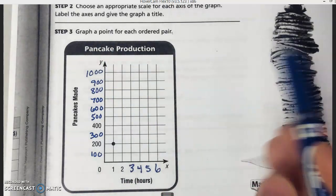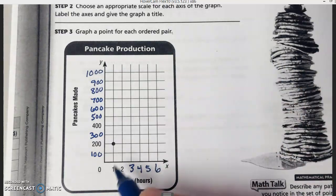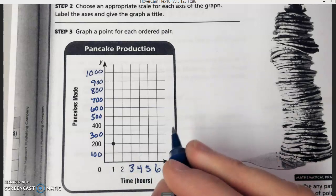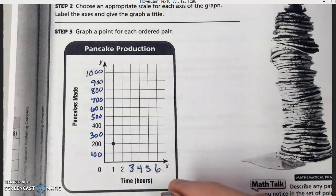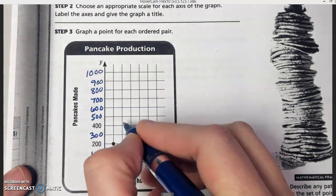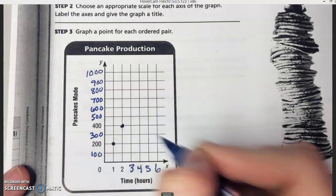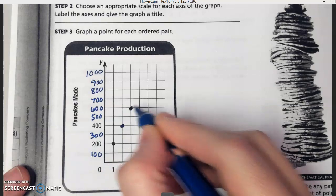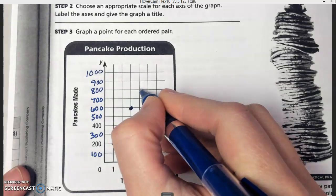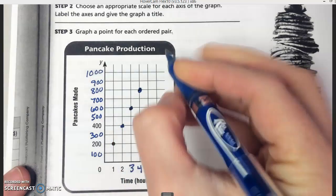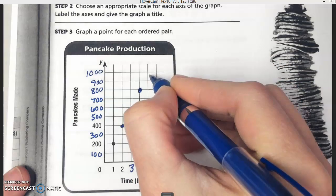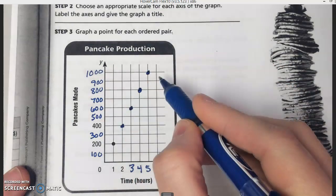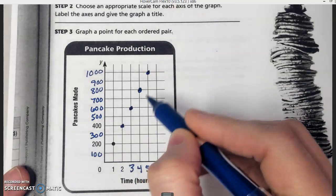The next step is to graph our ordered pairs. The first ordered pair is already graphed for us, one and 200. Then we had two and 400, so two and 400 would be here. Then we had three and 600. Then we had four and 800. And then we had five and 1,000. If you connected all these, we'd have a nice diagonal line.